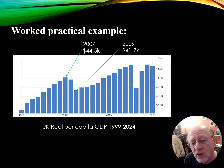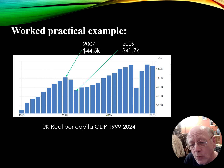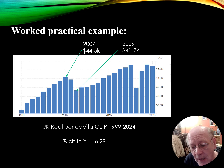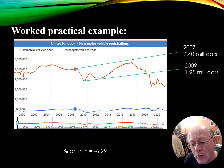In 2007, the average income per head in the UK was roughly $44,500, and by 2009 it had gone down to $41,700. That represents a change in income of minus 6.29%.